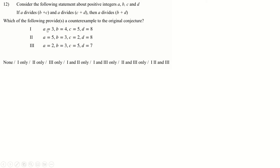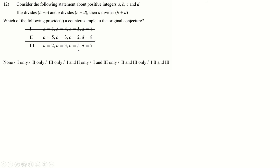Question 12 is about remainders but we just need counter-examples. Does 3 divide 4 + 5? Yes, 3 divides 9. Does 3 divide 5 + 8? No, 5 + 8 = 13. So statement 1 is discounted. Does 5 divide 3 + 2 = 5? Yes. Does 5 divide 2 + 8 = 10? Yes. But does 5 divide b + d = 3 + 8 = 11? No — so that's a counter-example. Only statement 2 satisfies the condition.